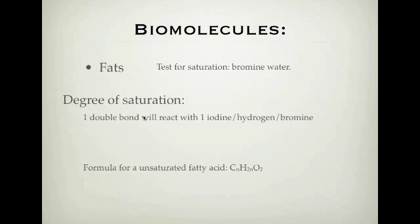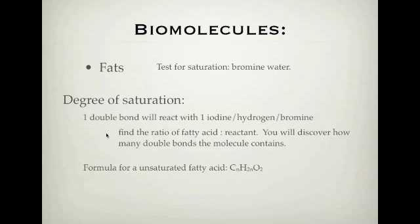To test the degree of saturation, you have to think about what's happening in terms of a reaction involving bromine, iodine, or hydrogen. One double bond will react with one iodine, one hydrogen, or one bromine. This fact will help you understand how many double bonds a fatty acid has. You need to find the ratio of the fatty acid to your reactant. So if you find the ratio of moles of fatty acid to moles of iodine, that ratio tells you how many double bonds the molecule has. If the ratio is one to one, you have one double bond. If the ratio is one mole of fatty acid to two moles of iodine, you have two double bonds in your fatty acid.